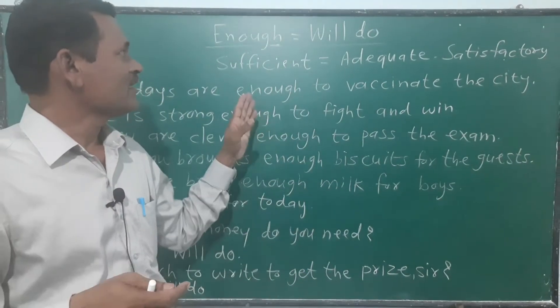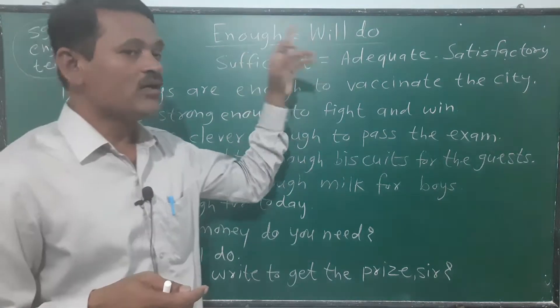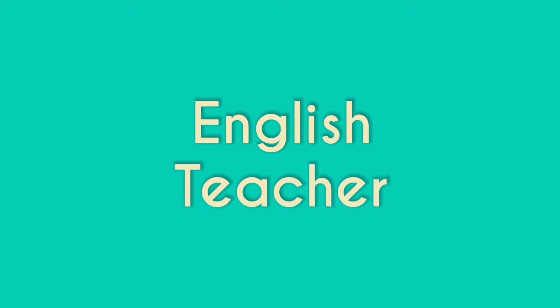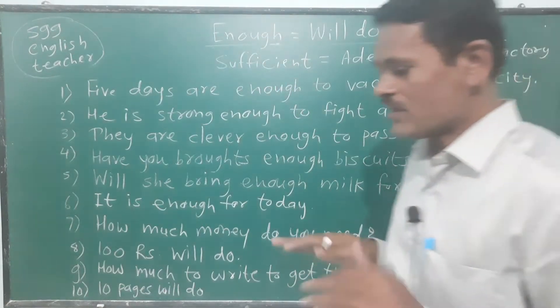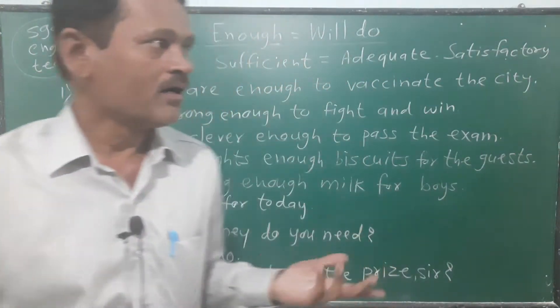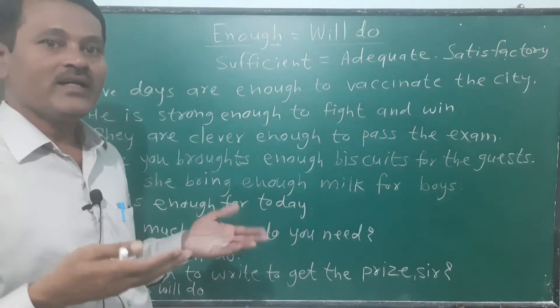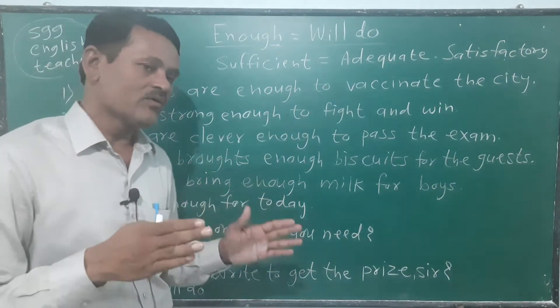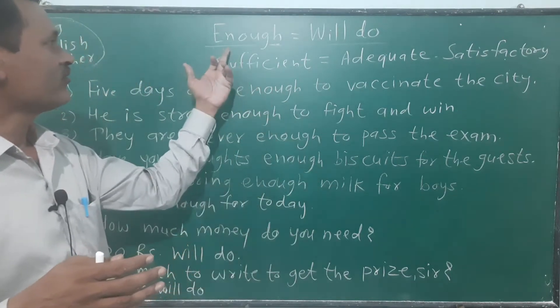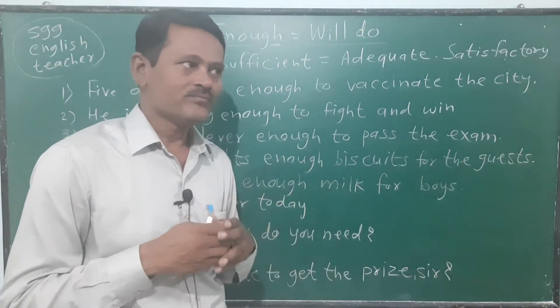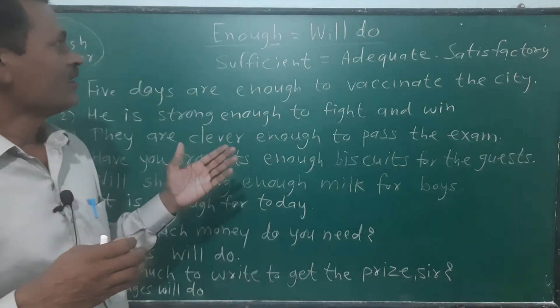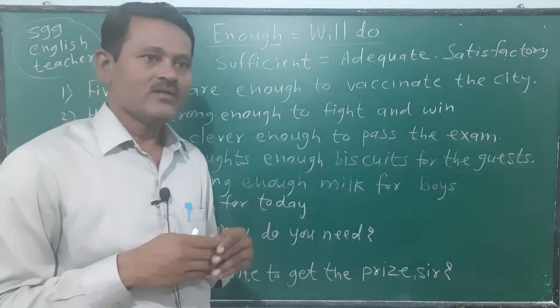Enough is equal to will do. Enough means a sufficient amount — as much as someone needs. For example: There is enough air in the tire. I don't get enough time to do exercise.